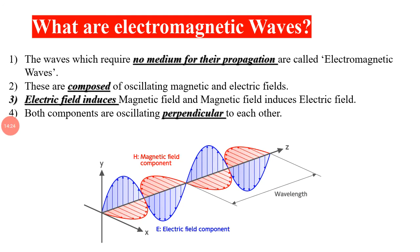Electromagnetic waves do not require a medium for propagation — they can travel through vacuum and space. This is in contrast to mechanical waves, which need a medium. Electromagnetic waves have two components: an electric field and a magnetic field. The electric field induces the magnetic field and the magnetic field induces the electric field — they are mutually perpendicular. These are described by Maxwell's equations, which explain how each field induces the other.